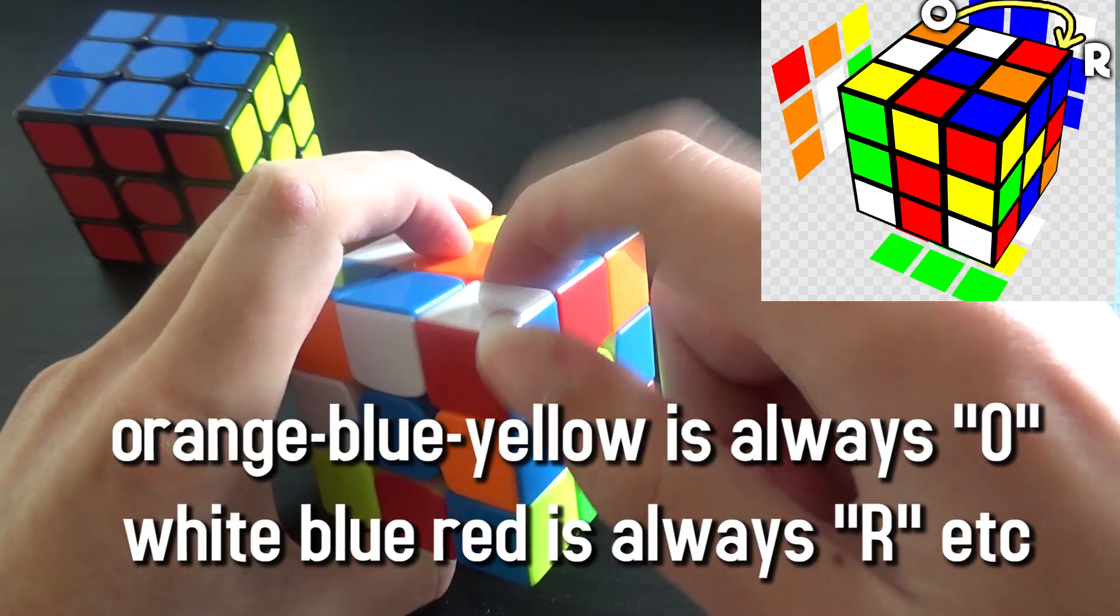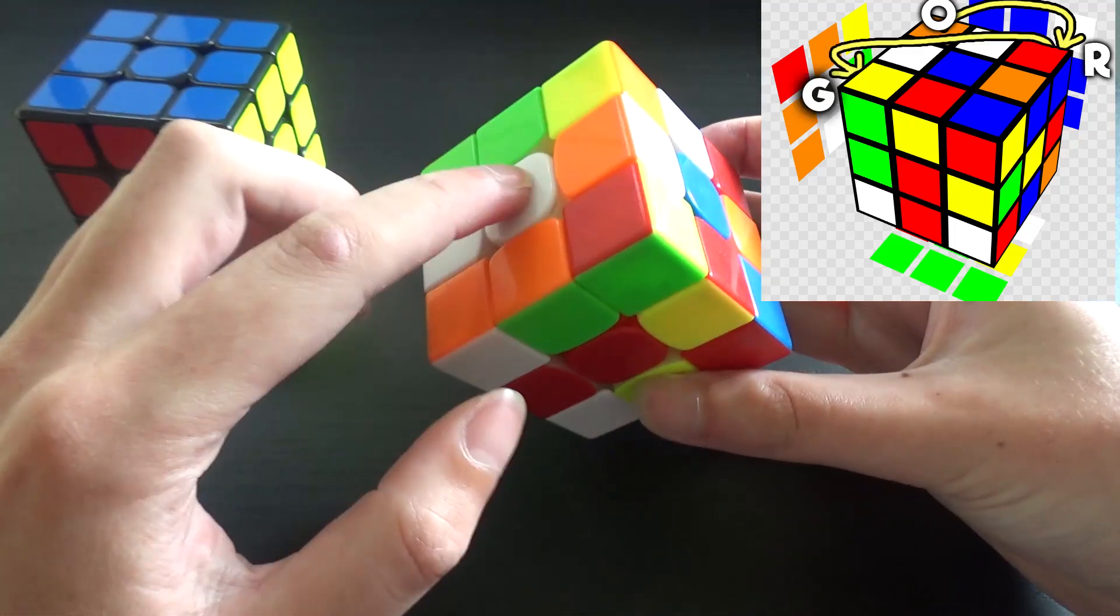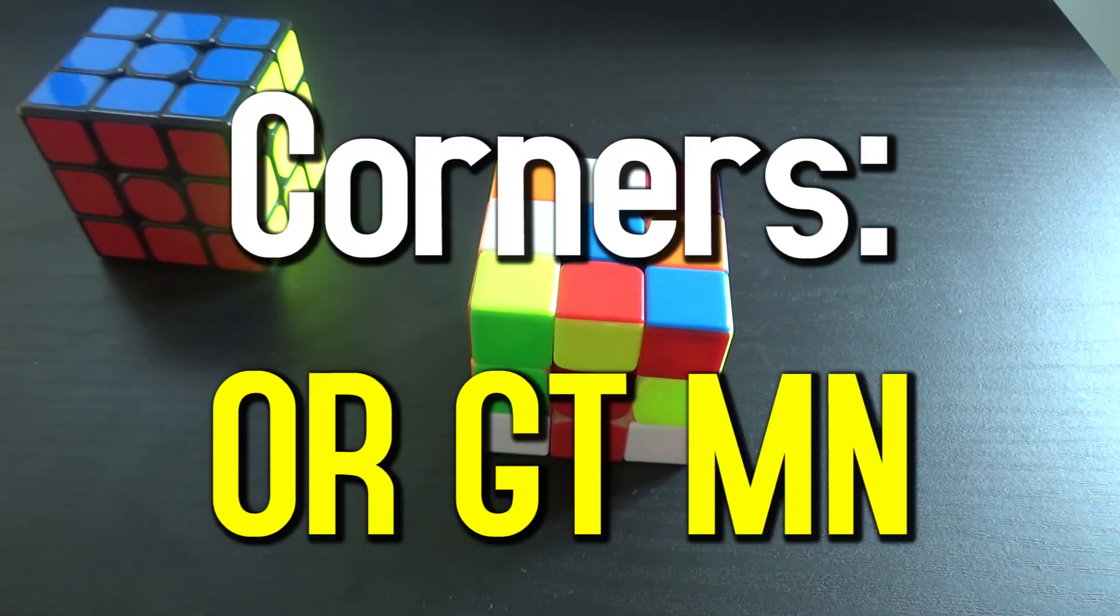Then we look at that corner, this white red blue piece, where does that go? Between the white red and blue centers up here. So after all that what I've got is the letters O-R-G-T-M-N.